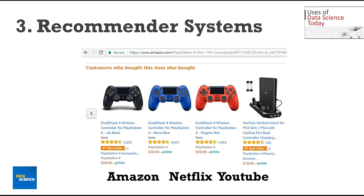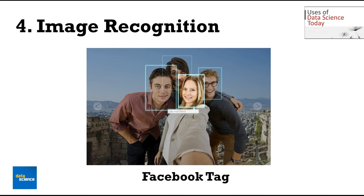Internet giants like Amazon, Twitter, Google Play, Netflix, LinkedIn, IMDB, and many more use this system to improve user experience. The recommendations are made based on previous search results for a user. You upload your image with friends on Facebook and you start getting suggestions to tag your friends — this automatic tag suggestion feature uses a face recognition algorithm.